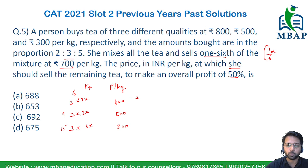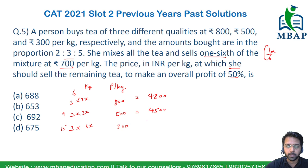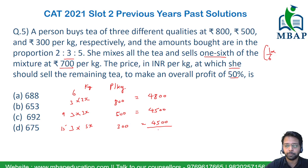Now let's calculate the total cost. The 6 kg at 800 Rs/kg costs 4,800 Rs. The 9 kg at 500 Rs/kg costs 4,500 Rs. The 15 kg at 300 Rs/kg also costs 4,500 Rs. So the total cost of all 30 kg of all varieties combined accounts for 4,800 + 4,500 + 4,500 = 13,800 Rs.